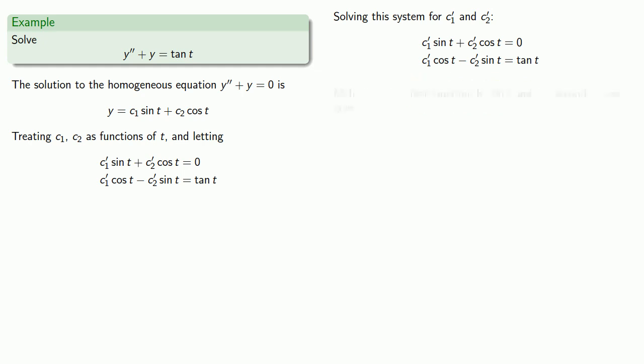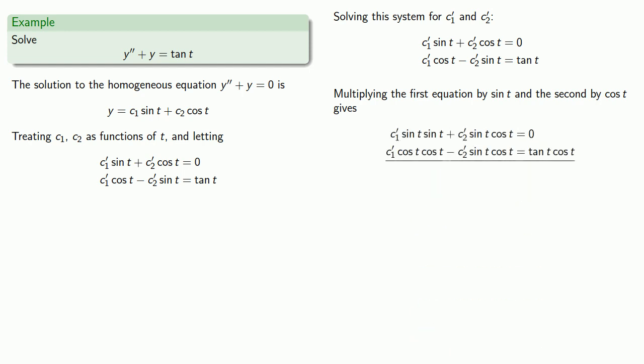One way we might do that is if we multiply the first equation by sine of t and the second equation by cosine of t. If we add our two equations and simplify this, c1 prime is sine of t.